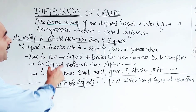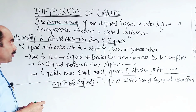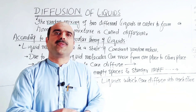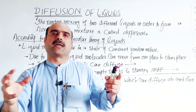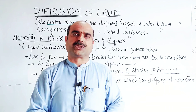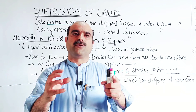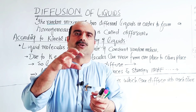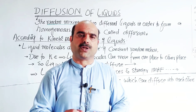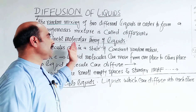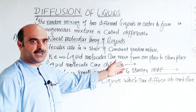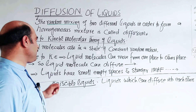For example, consider different liquids being mixed. The liquid molecules enter the spaces of the other liquid molecules. The result is a homogeneous mixture, due to the kinetic energy of the liquid molecules and their random mixing properties.